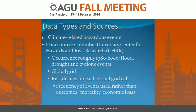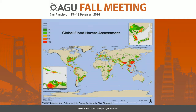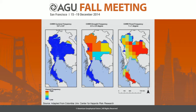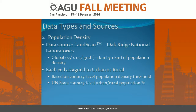In terms of data sources, the Columbia University Center for Hazards Risk Research had data on flood, drought, and cyclone — a global grid dataset from roughly 1980 to 2000. We used risk deciles for each global grid cell. We used the frequency of events or the occurrence of events over that time, not the outcomes, because the outcomes are confounded by sensitivity and adaptive capacity terms — we wanted just a raw exposure term. Here's what their flood map looks like as an example, and when you zoom in you can see Thailand: cyclone frequency, drought frequency, flood frequency. You can see the datasets are at different resolution.